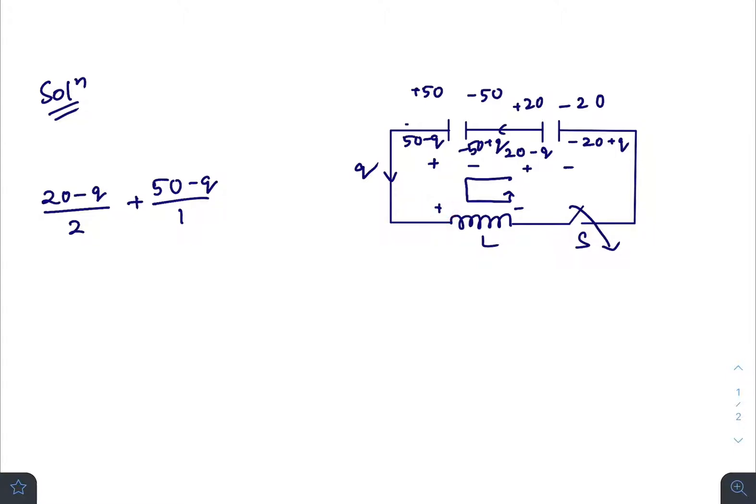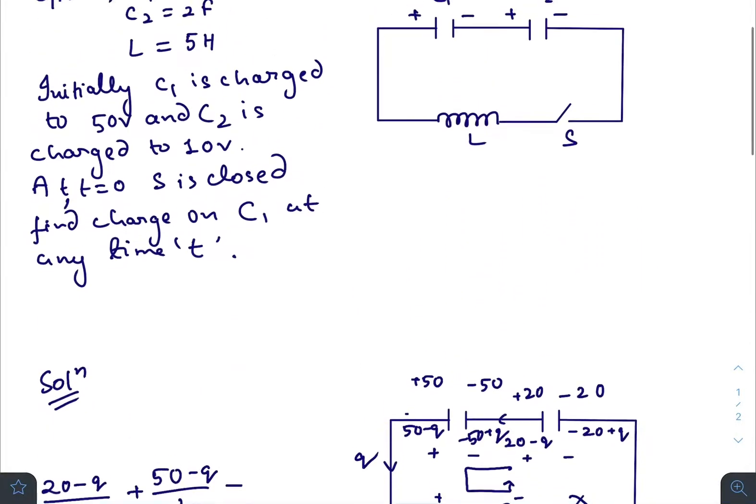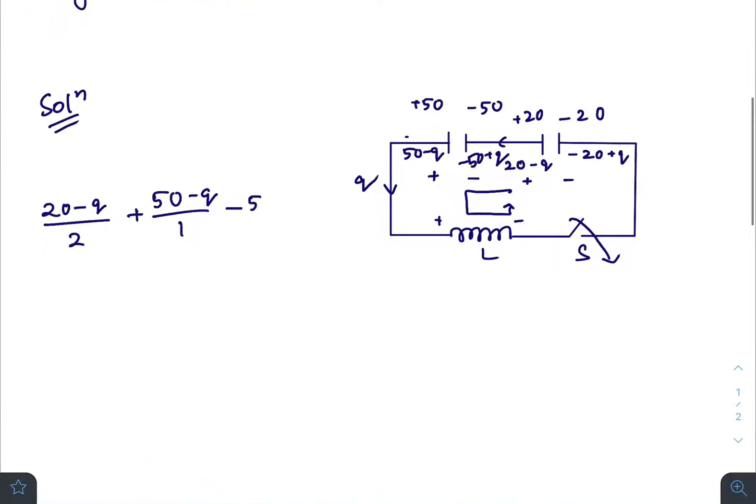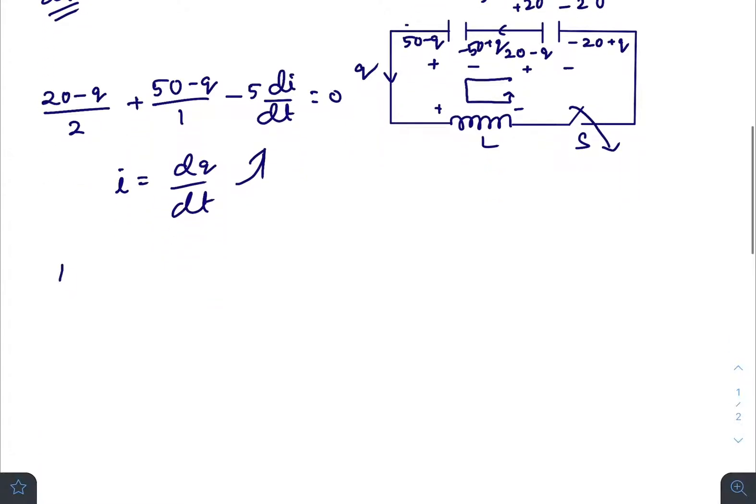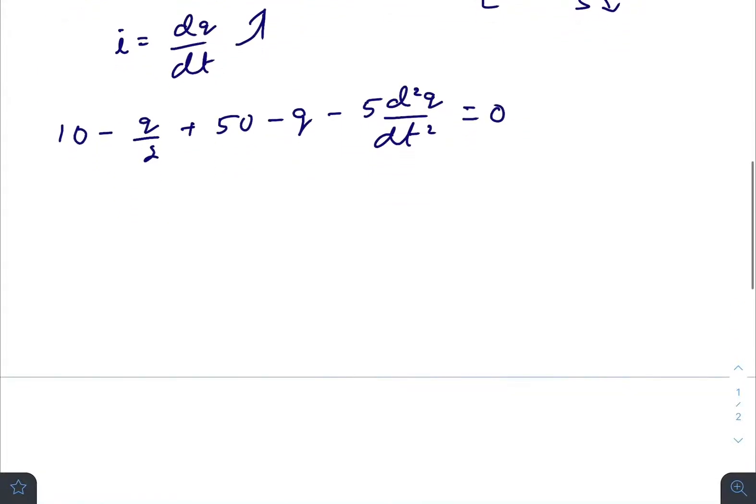From plus to minus, minus L, so the value of the inductor was 5 times di/dt equals zero. i will be equal to dq/dt, so we will just put the value. We have 10 minus q/2 plus 50 minus q minus 5 d²q/dt² equals zero. So 60 minus 3/2 q minus 5 d²q/dt² equals zero.